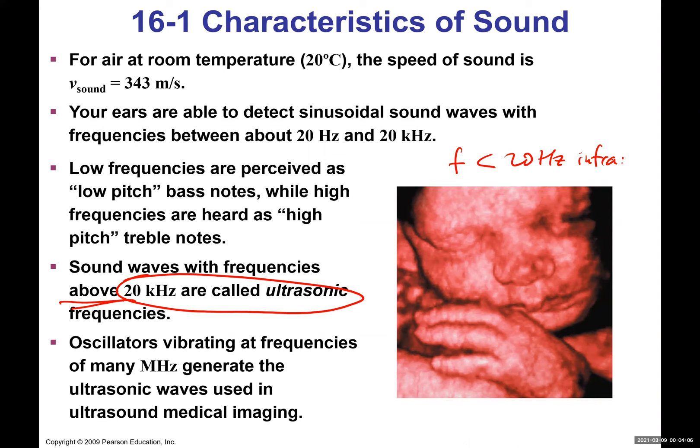Ultrasonic imaging uses frequencies like 50,000 or 100,000 Hz to generate an image of a baby, for example. A sound wave is sent and it partially reflects back — as we learned in the last chapter, waves always reflect at least partially — and we can use that reflected information to generate an image.